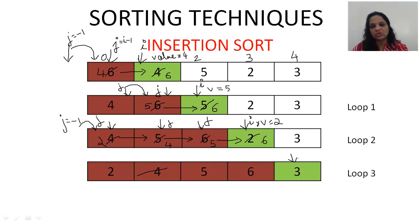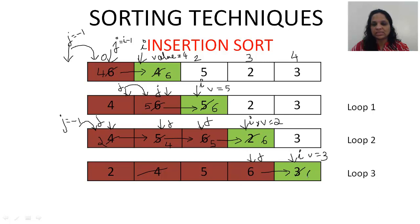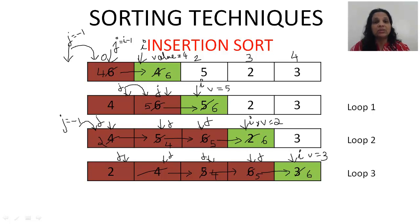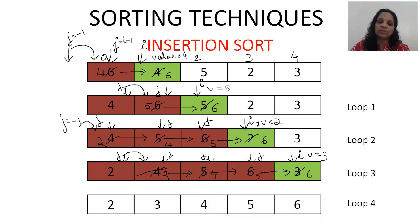Now i has reached the last position — we're considering element 3. Remember to store it in a temporary variable. J starts one before i. Is 6 greater than 3? Yes, shift 6 here. Decrement j. Is 5 greater than 3? Yes, shift it here. Decrement j. Is 4 greater than 3? Yes, shift 4 here. Decrement j. Now interestingly, is 2 greater than 3? No — so at j+1 location, we insert the value 3. That is the result of pass 4, and the list is already sorted.